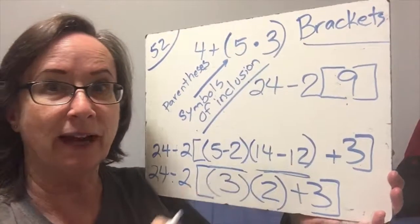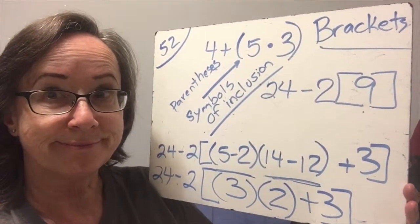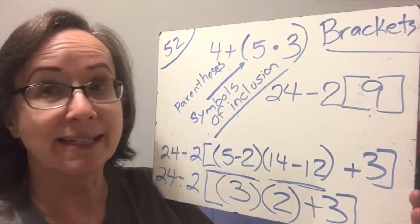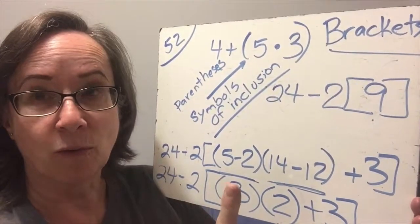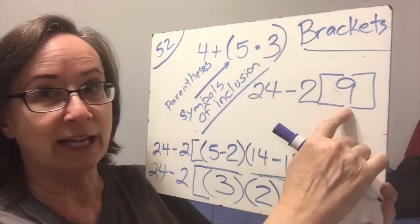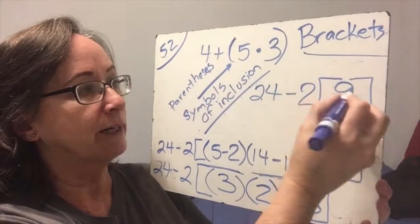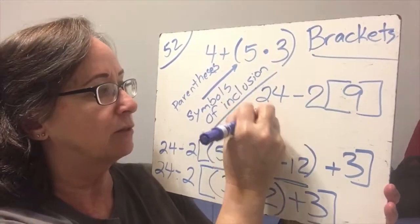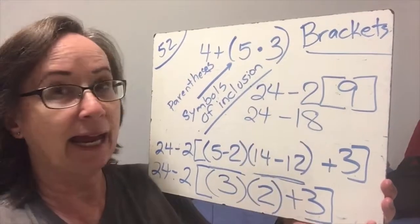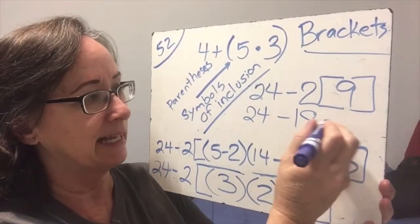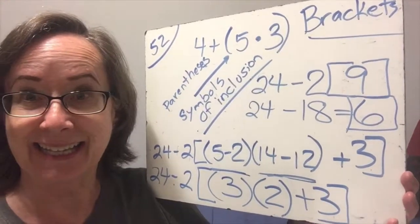Well now we've simplified it down to this, but now we've got a minus and a times, which comes first? The times does. Not because of the bracket, but because of the order of operations. Multiplication comes before subtraction. So we're going to go ahead and multiply the 2 times the 9. So 24 minus 18, and 24 minus 18 is 6. So the answer to the whole problem is 6.